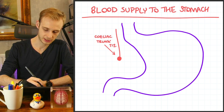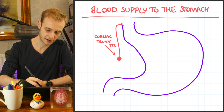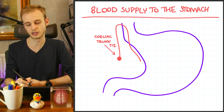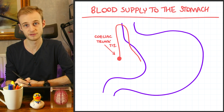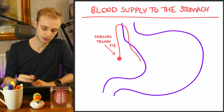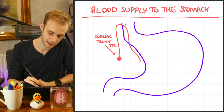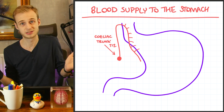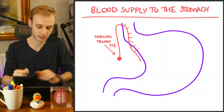The first and simplest branch is the left gastric artery, which goes up and then loops back down to follow the lesser curve of the stomach, providing branches to that aspect of the stomach as it goes.